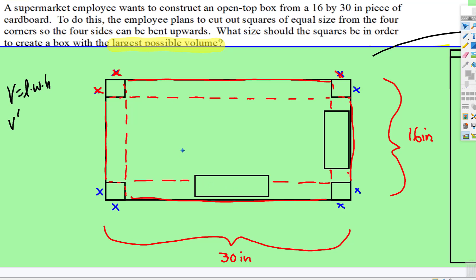So the length of the new box, of the box that's created, well, this is the length of x and this is the length of x, but we're cutting that out. So this new length, the red length right here, is 30 subtract 2x, and this new width is 16 subtract 2x.